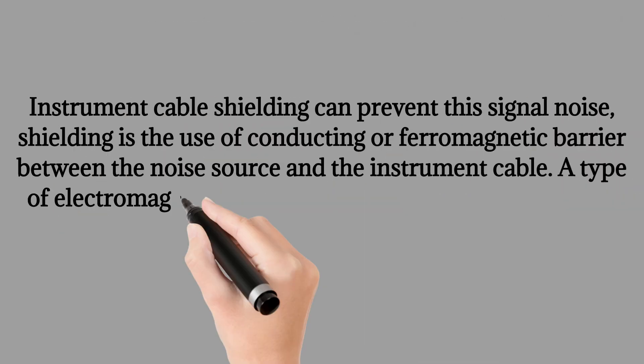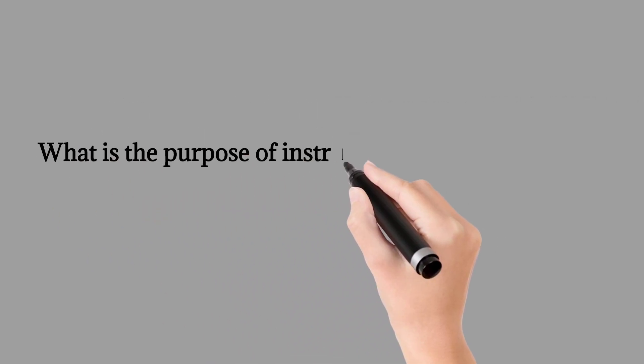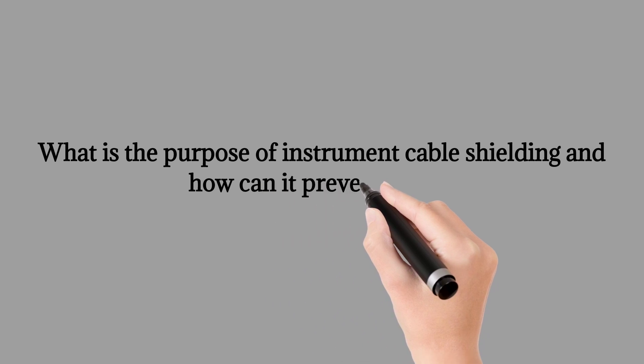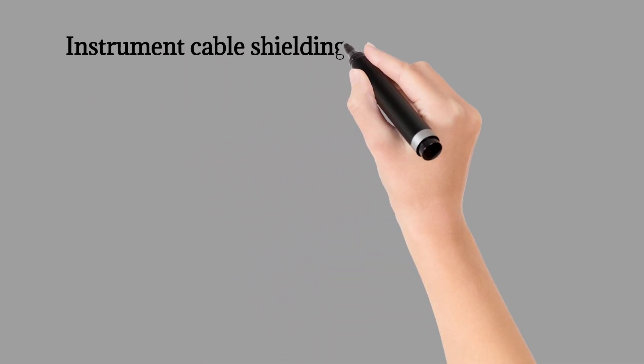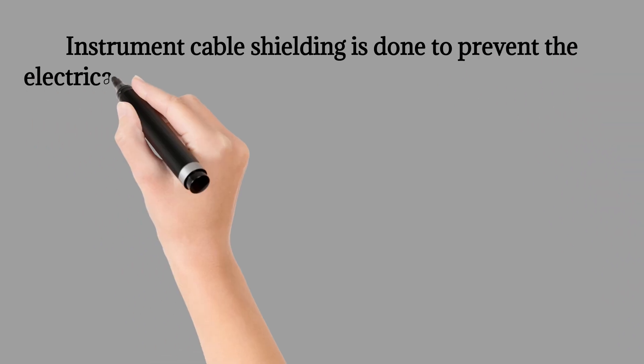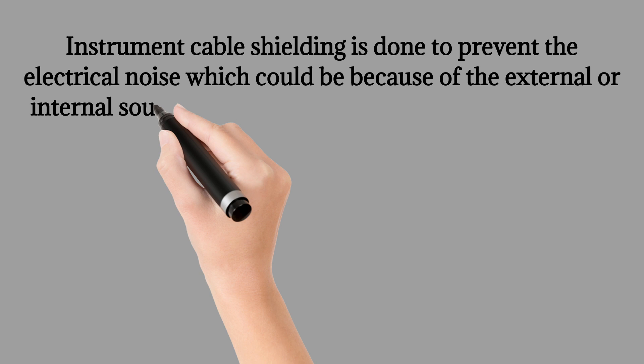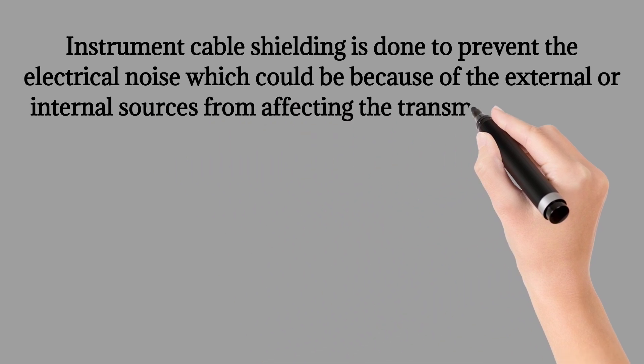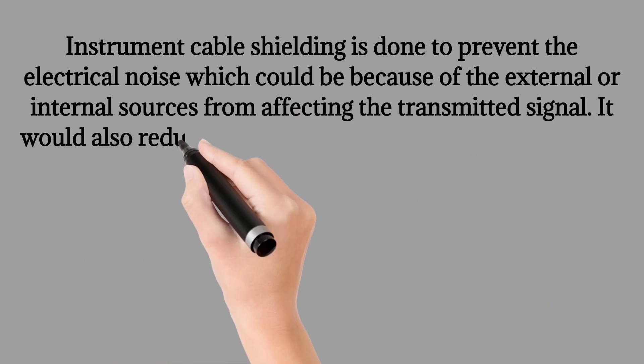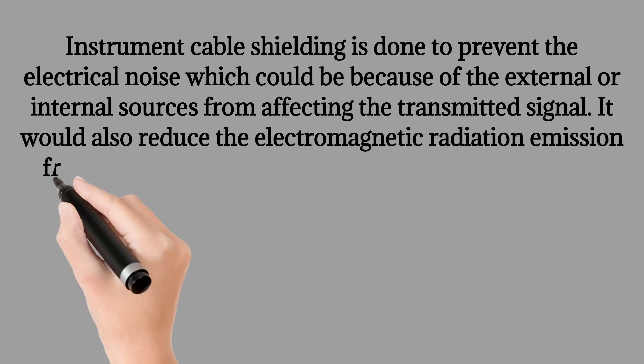Instrument cable shielding can prevent this signal noise. What is the purpose of instrument cable shielding and how can it prevent noise? Instrument cable shielding is done to prevent the electrical noise which could be because of the external or internal sources from affecting the transmitted signal. It would also reduce the electromagnetic radiation emission from the cable itself.